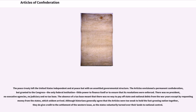The peace treaty left the United States independent and at peace but with an unsettled governmental structure. The Articles envisioned a permanent confederation, but granted to the Congress, the only federal institution, little power to finance itself or to ensure that its resolutions were enforced. There was no president, no executive agencies, no judiciary, and no tax base. The absence of a tax base meant that there was no way to pay off state and national debts from the war except by requesting money from the states, which seldom arrived. Although historians generally agree that the Articles were too weak to hold the fast-growing nation together, they do give credit to the settlement of the Western issue, as the states voluntarily turned over their lands to national control.